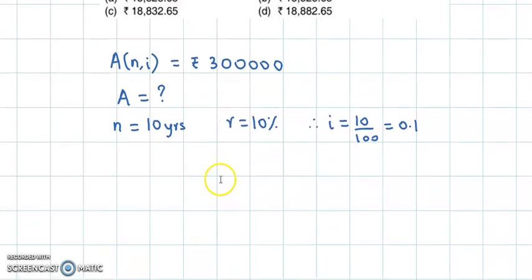And now we use the formula for accumulated value. So A(n,i) is equal to A upon i into 1 plus i raised to n minus 1.